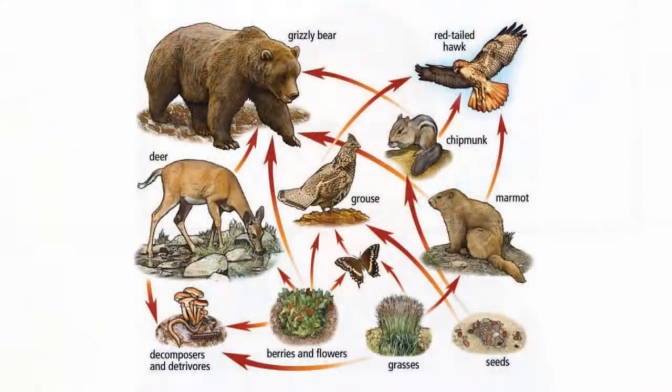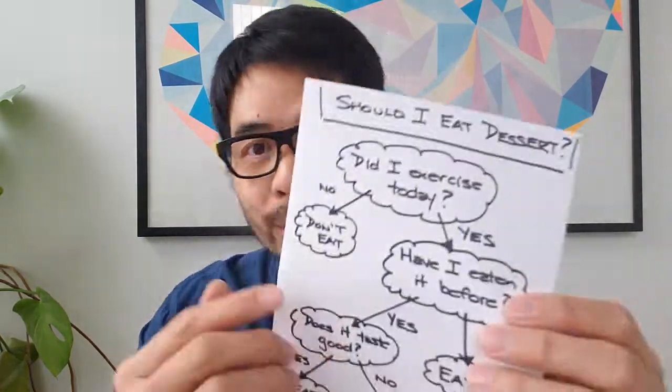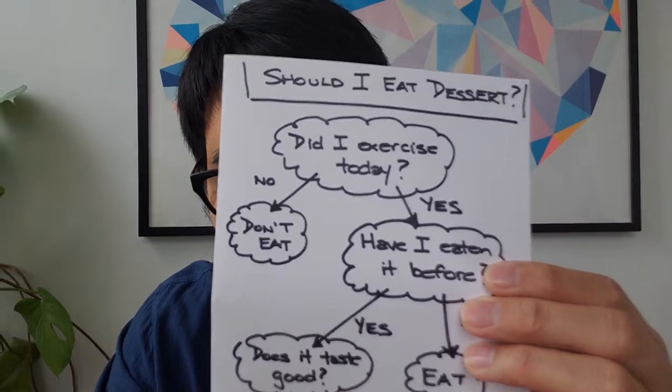For example, in a food web, which represents relationships between plants and animals — predator and prey — if we were to remove one, we could predict what would happen to the others. A decision tree is a simple way to create a conceptual model. What makes it so simple is that it uses yes and no questions to come to an answer to a larger question.